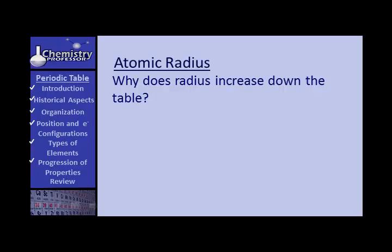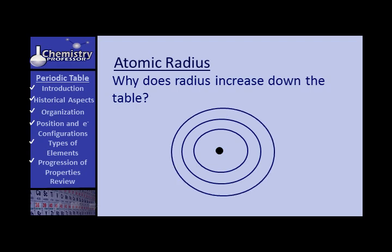Why does radius increase down the table? Well, it's really kind of intuitively obvious. Here you have the nucleus and the first orbital. The second orbital, which is the second period now, is further out. The third orbital is further out yet, and so the atom is getting larger. The fourth orbital is further out yet, and so we go.